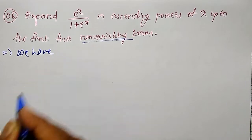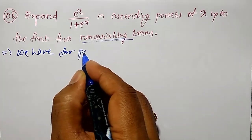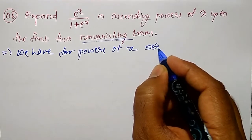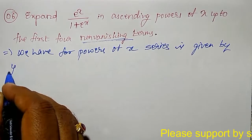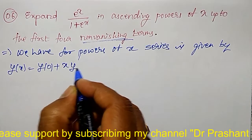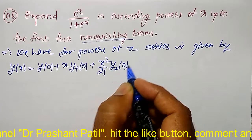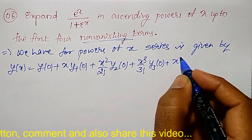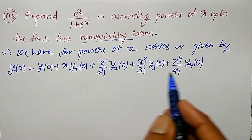We use the Maclaurin series in powers of x. The series is given by: y(x) = y(0) + x·y₁(0) + (x²/2!)·y₂(0) + (x³/3!)·y₃(0) + (x⁴/4!)·y₄(0). Using this formula, there are a total of five terms.